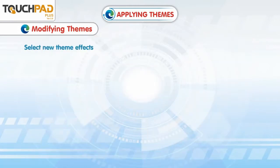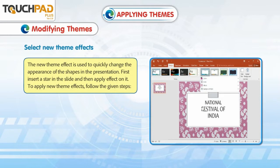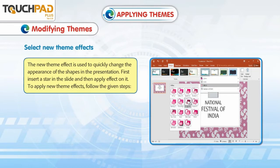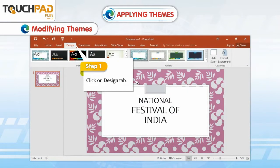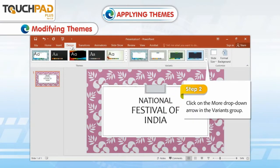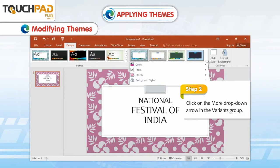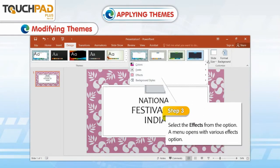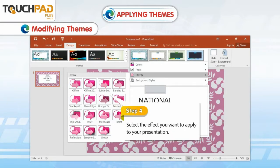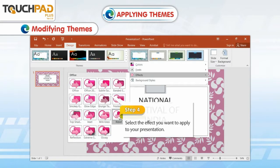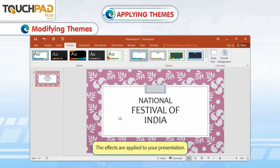Select New Theme Effects. The New Theme Effect is used to quickly change the appearance of the shapes in the presentation. First, insert a star in the slide and then apply an effect on it. To apply New Theme Effects, follow the given steps. Step 1: Click on the Design tab. Step 2: Click on the More drop-down arrow in the Variants group. Step 3: Select the Effects from the options. A menu opens with various effects options. Step 4: Select the effect you want to apply to your presentation. The effects are applied to your presentation.